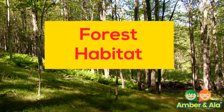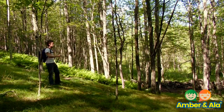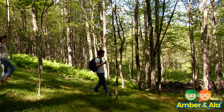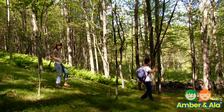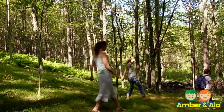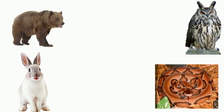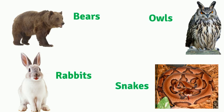This is the forest habitat. It is very different from the desert and the ocean habitat because there are a lot of trees. There are animals that live in the forest habitat. Some of the animals that live in this habitat are bears, rabbits, owls, and snakes.